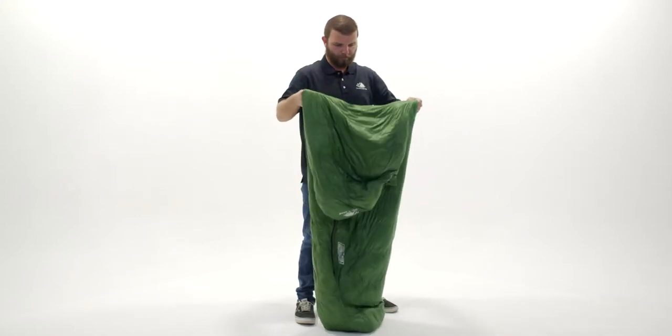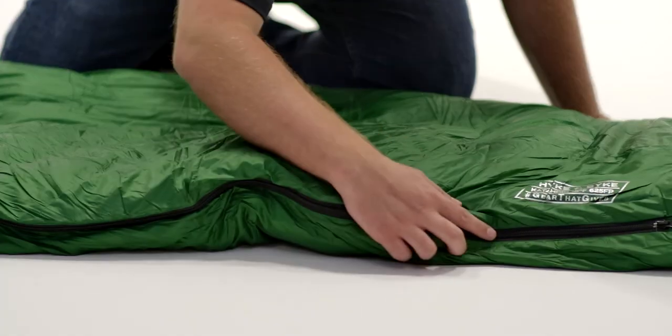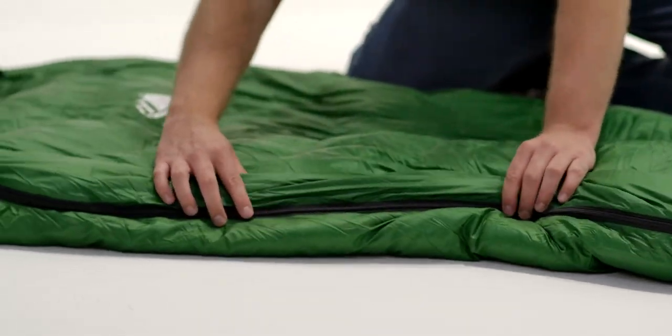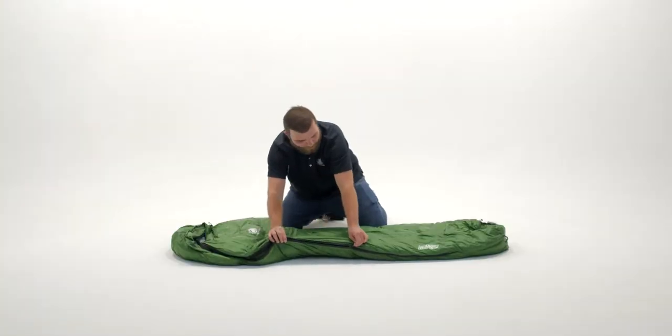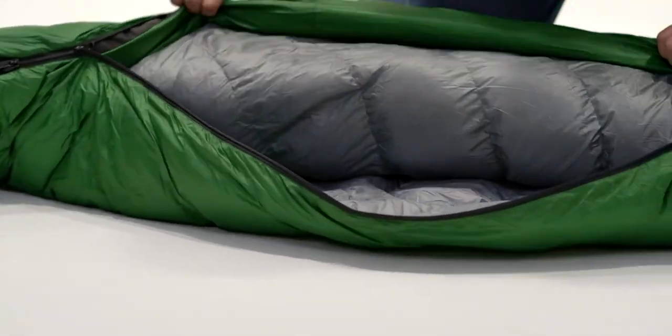The full-length zipper is along the right side with two sliders, which allows you to open the bottom of the bag while keeping it zipped up around your head. This feature provides ventilation and freedom of movement for your legs, whether you want to sit cross-legged, walk outside your tent, or just poke your feet out for venting.